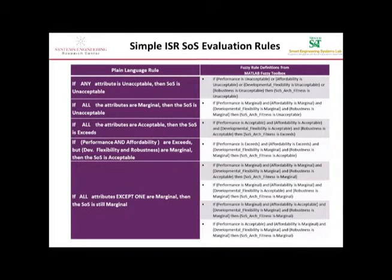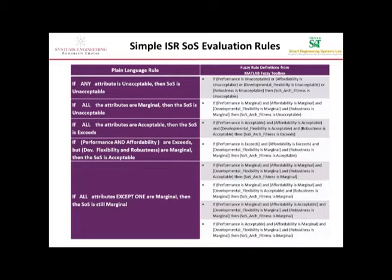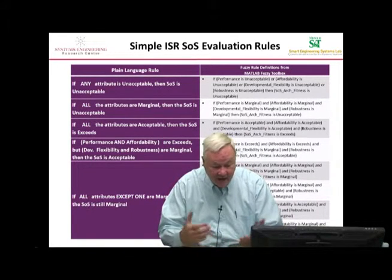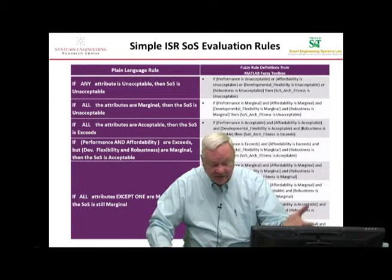If all of them are marginal, then the SOS is not just marginal — it's unacceptable. But if one or two of the attributes are marginal yet the other attributes more than make up for that, maybe I'll accept that system of systems. That's the fourth rule: if performance and affordability exceed requirements but flexibility and robustness are marginal, then the SOS is still okay. So if I'm picking between two architectures and one has very good performance and affordability but not so good flexibility and robustness, that's still a pretty good system of systems compared to one that's all merely average.